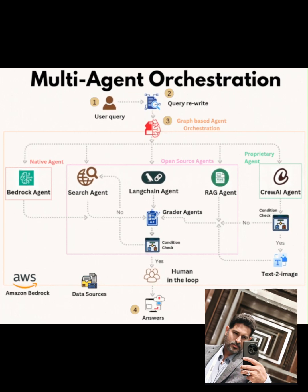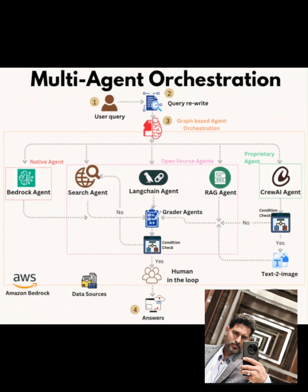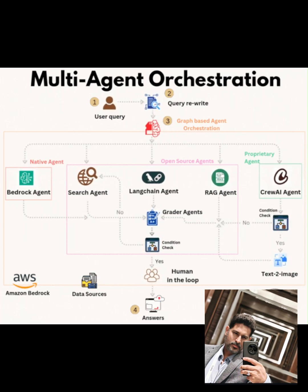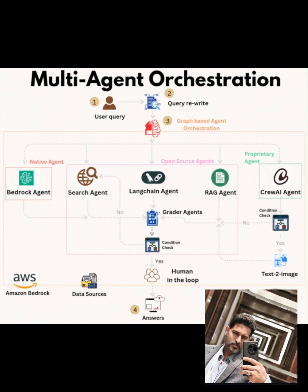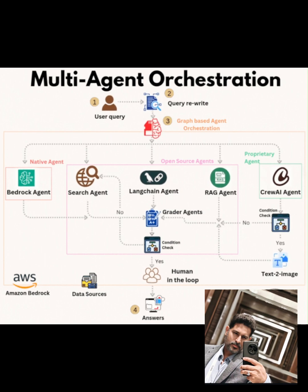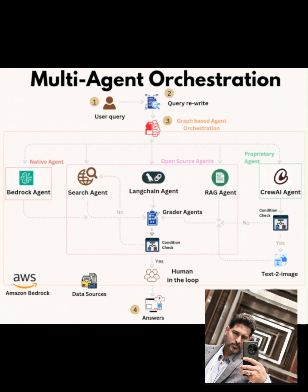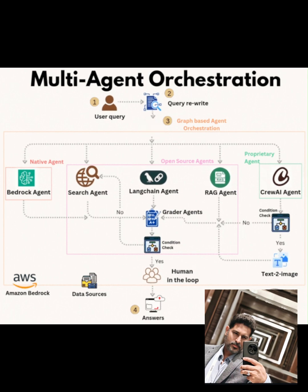Hey everyone, welcome back to the channel. Today we explore the fascinating world of multi-agent orchestration, a powerful approach to building intelligent AI systems. Multi-agent orchestration involves coordinating multiple AI agents to handle complex tasks, leveraging their unique capabilities to deliver accurate, context-aware answers.